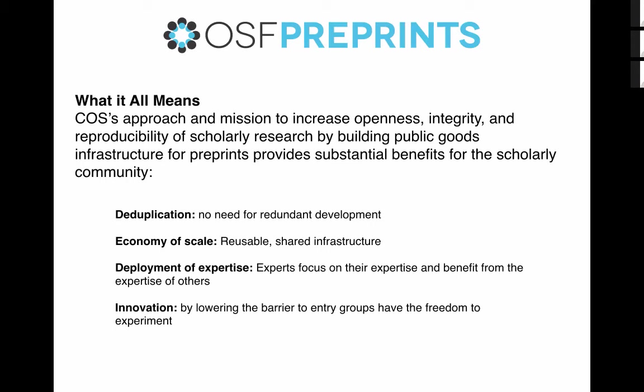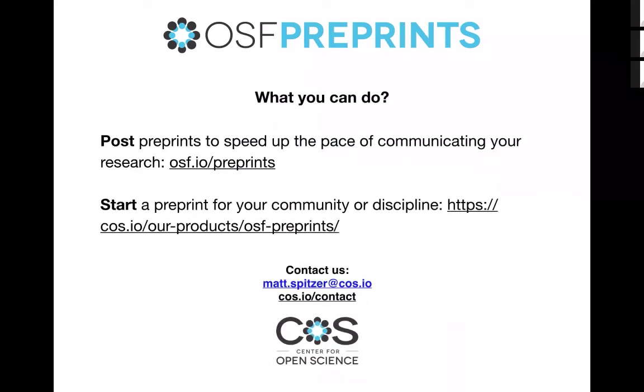The deployment of expertise is a really critical factor. Developers focus on deploying secure, robust, scalable enterprise infrastructure, which frees scholarly communication experts to focus on the process, the education, and the promotion of preprints. You don't have to become a technology or infrastructure expert to help foster preprints within your community. And last, innovation: the open infrastructure lowers barriers significantly for entry and gives groups the freedom to experiment with scholarly communication practices while leveraging robust infrastructure that supports both new and traditional models. We appreciate any feedback and welcome collaboration with any scholarly communication experts to support a variety of use cases for preprints, moderation, and other publication practices.